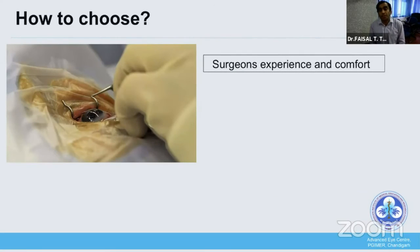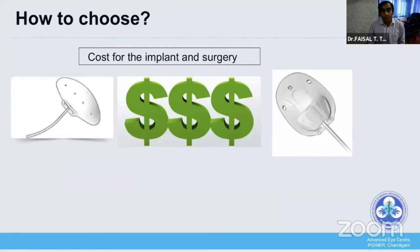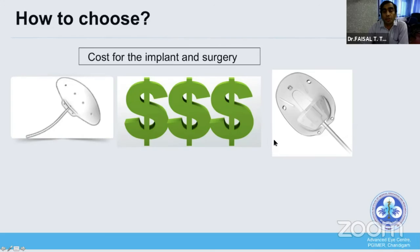Surgeon experience and comfort are also important — one should prefer the implant they are most comfortable with. Finally, the cost factor is significant, especially in the Indian scenario: the ADI costs around 4,000–6,000 rupees, whereas the AGV now costs more than 20,000 rupees, making cost a major barrier to opting for a valve device in our setting.